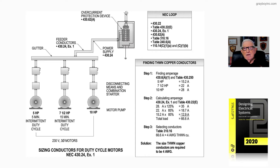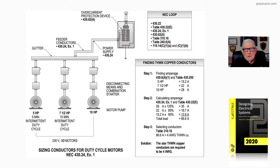In Step 1: the 5 horsepower motor is 15.2 amps, the 7.5 horsepower is 22 amps, and the 10 horsepower is 28 amps — based on voltage, horsepower, and Table 430.250, referenced from NEC Section 430.6(A)(1).